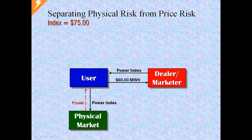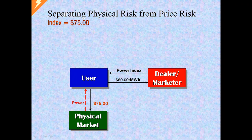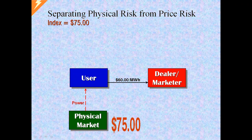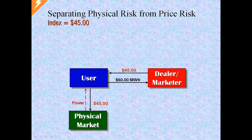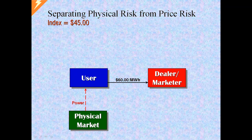Now let's see how this structure plays out. If power index rises to $75, the user pays the $75 to the power seller. But the user also receives $75 from the swap dealer. Those two flows exactly offset, leaving the user with a net cost of power of $60. Likewise, if index falls to $45, the user now pays $45 to the seller. But the user also receives $45 from the dealer on the swap. They again exactly offset, leaving the user with a $60 cost of power.